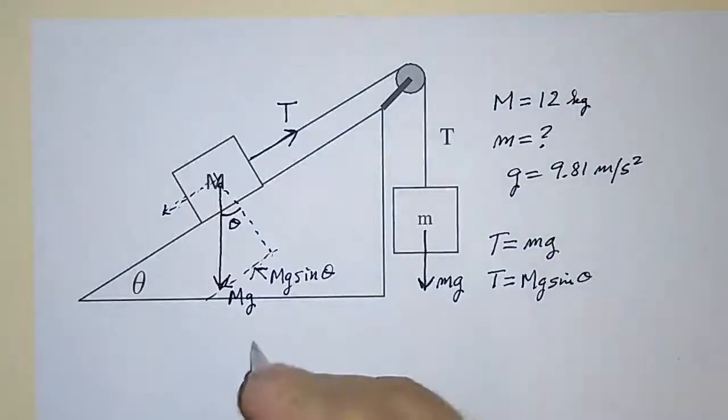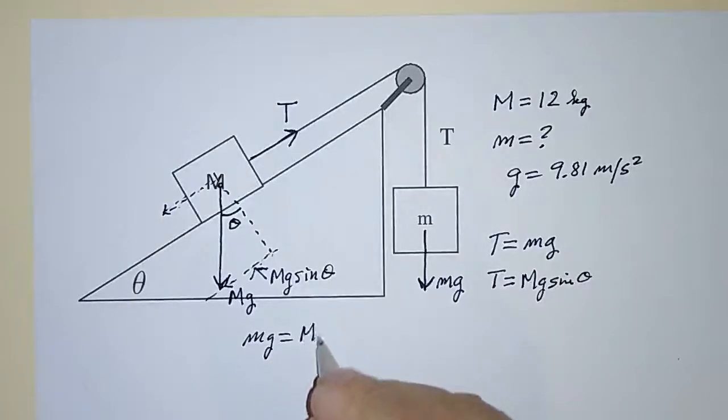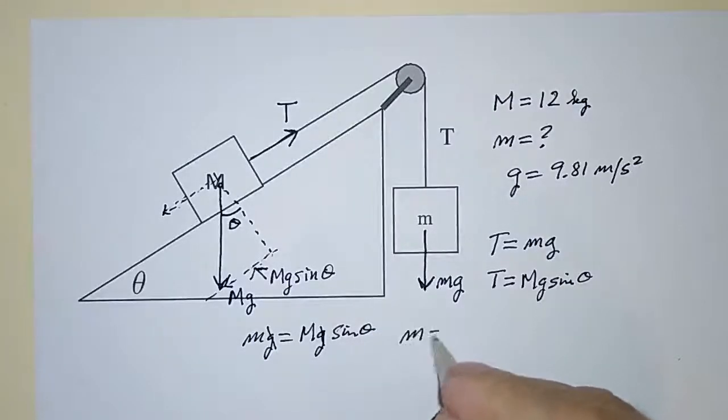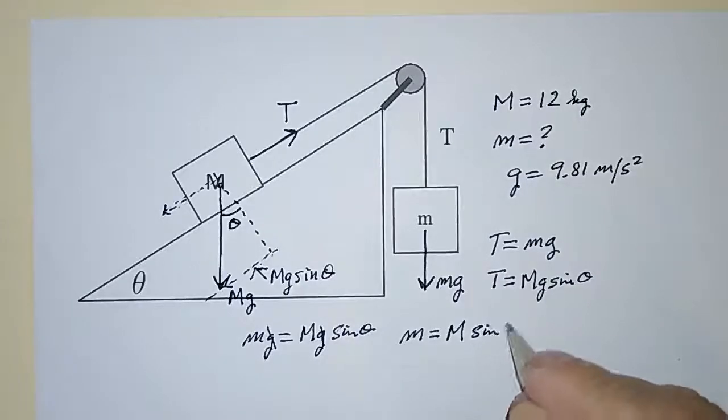So therefore, mg is equal to Mg sine theta. The G's cancel out, and m is equal to M times sine theta.